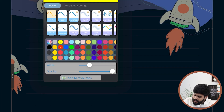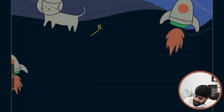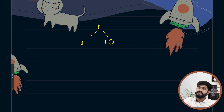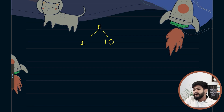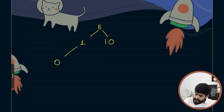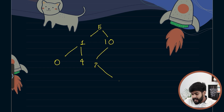A binary search tree is a tree where the left child is smaller than the parent and the right child is greater than the parent. A simple way to remember: if you move to the right in a BST, the value is more. Left side is less, right side is more — this property essentially sums up everything about BSTs.